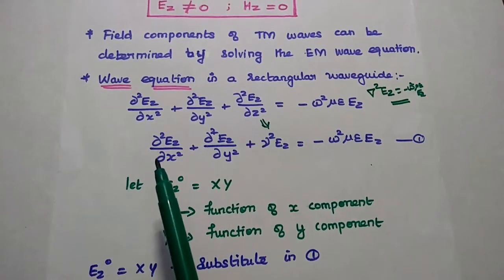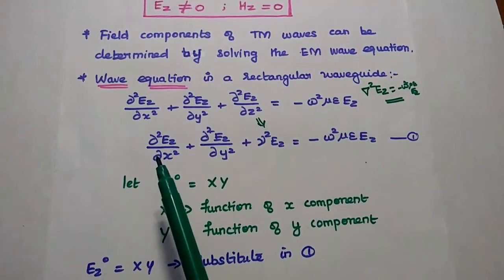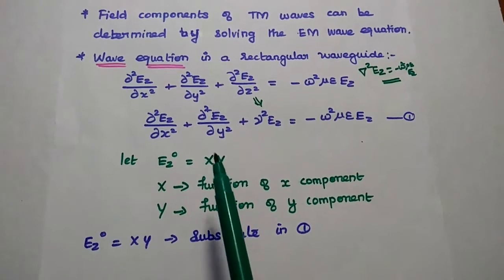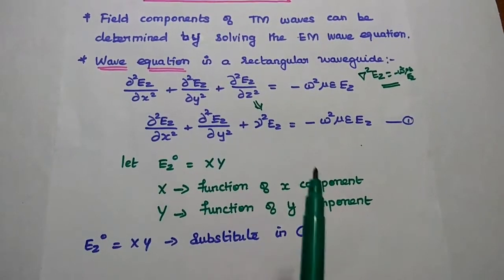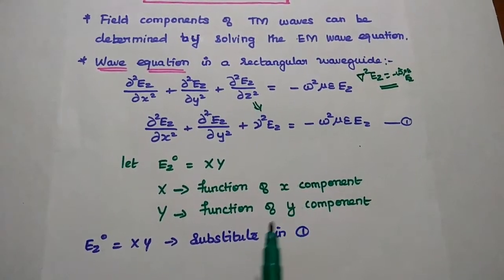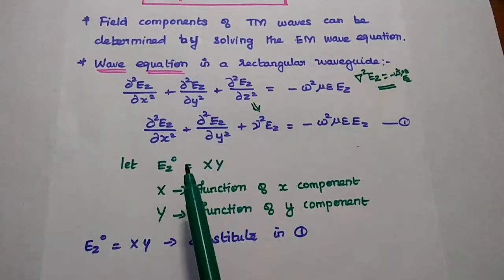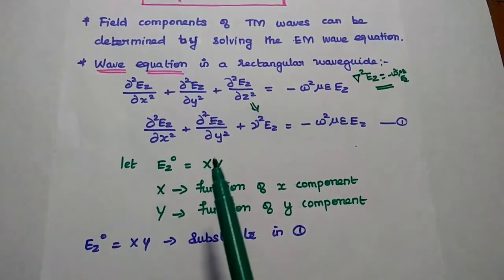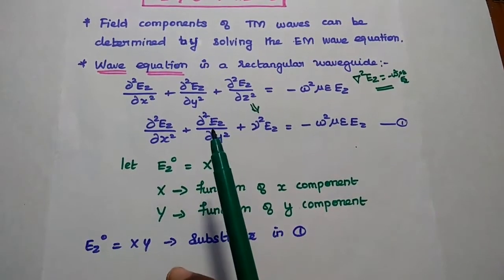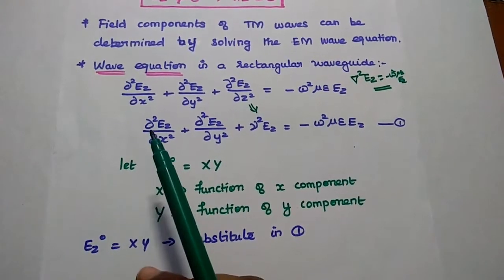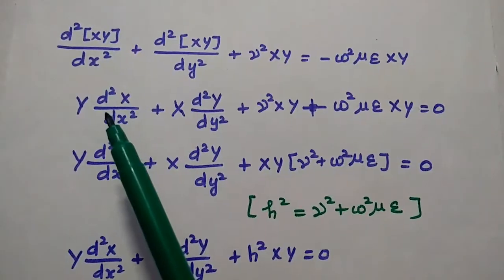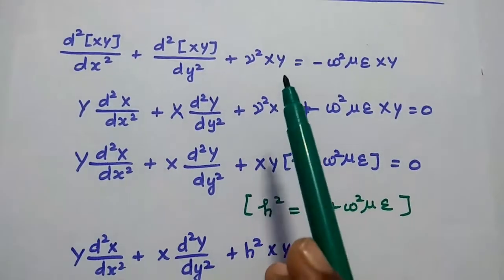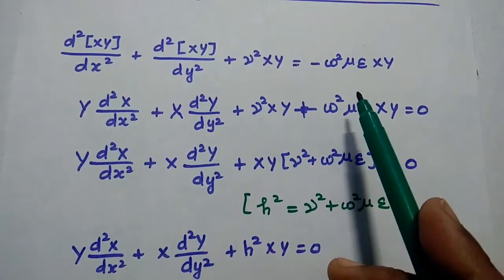We are using the partial derivative symbol because EZ has components of x as well as y. Capital X represents the function of x component alone, and capital Y represents the function of y component alone. So EZ naught, the amplitude of the electric field in the Z direction, is equal to X into Y. Substituting this value into the first equation, the wave equation becomes d squared XY by dx squared plus d squared XY by dy squared plus gamma squared XY is equal to minus omega squared mu epsilon XY.